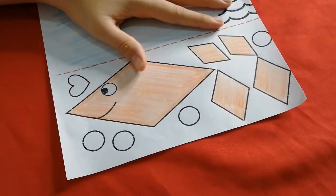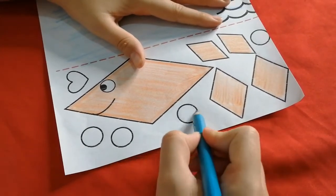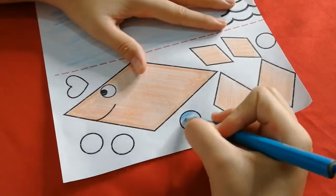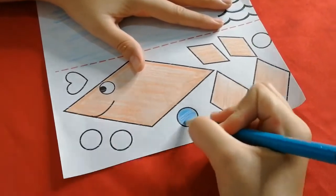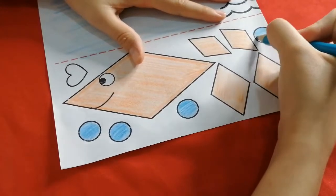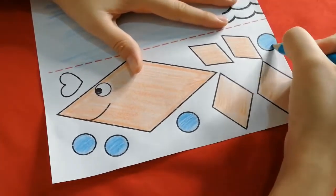Now, color the circle. Circle with light blue. Circle, circle, circle, circle. Circle, very good.